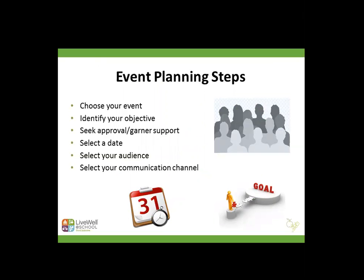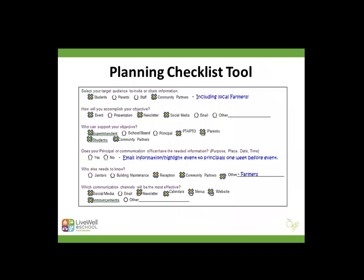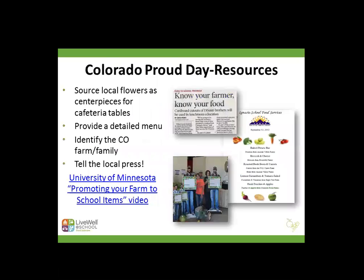When it comes to events, these can be a little more complicated. A few tips: choose your events, identify what you really want to accomplish, make sure you get support, select a date, choose an audience, and select a communication channel. Each event on its own can be its own little promotion. We've created a checklist tool — basically like a grocery list — so when you get there you know exactly what you need to do. It helps you identify your purpose, who you need approval from, any schedule conflicts, and helps you make decisions in advance that can otherwise become difficult at the last minute.